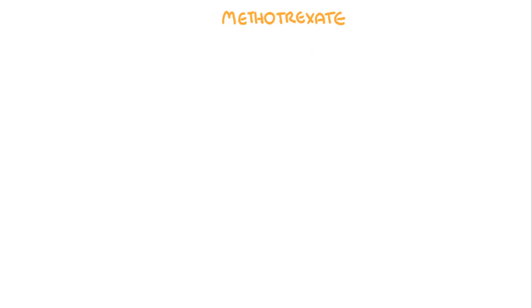Methotrexate is a popular disease-modifying anti-rheumatic drug and it is the first-line treatment for rheumatoid arthritis and other autoimmune diseases. It is an immunosuppressant, meaning it suppresses the immune system.